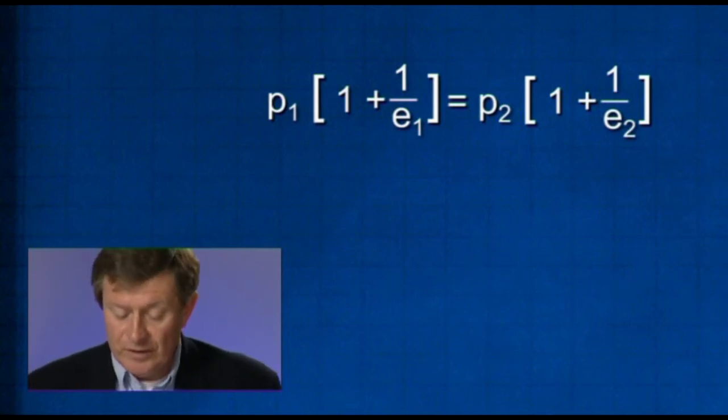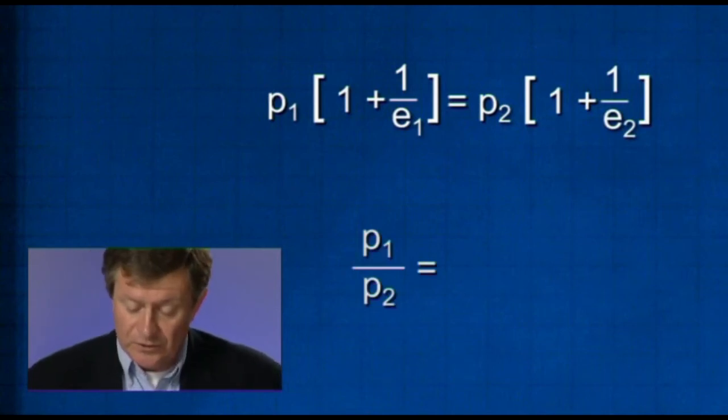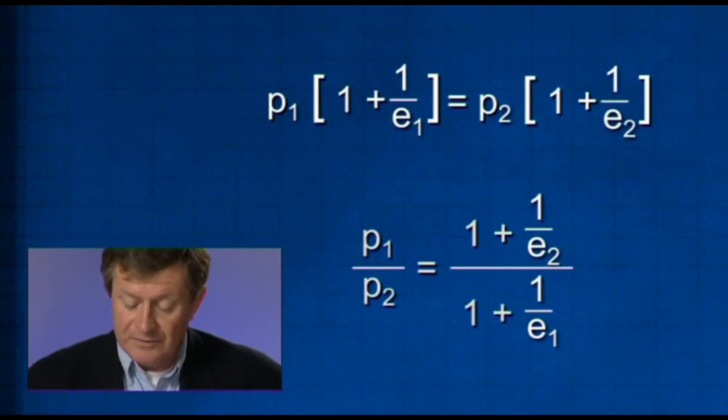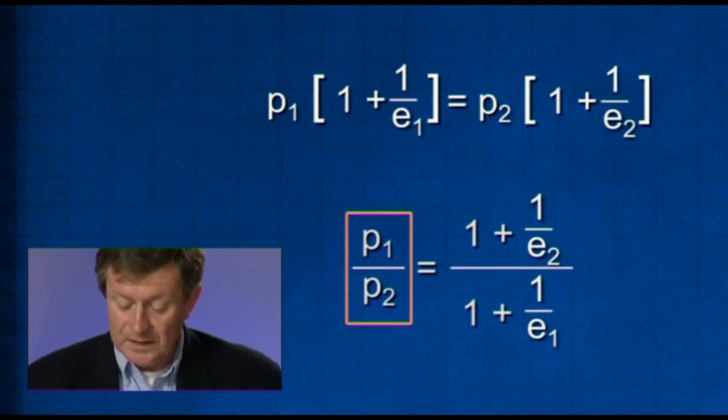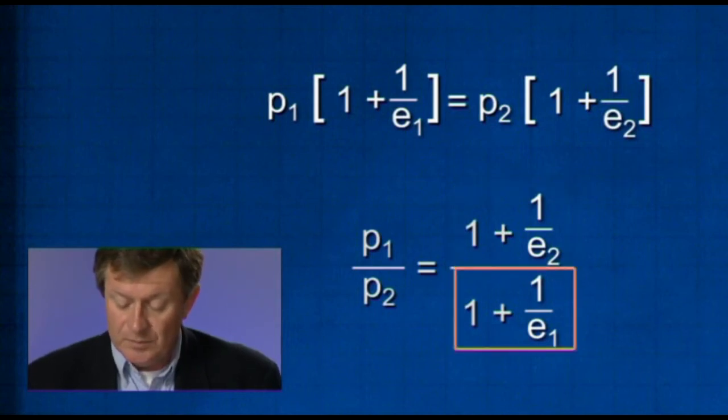And obviously we can rewrite it to have the prices on one side of the equation and the expressions involving the elasticities on the other side of the equation. Divide both sides by P2 and at the same time divide both sides by the expression in the brackets on the left-hand side, and we get P1 divided by P2 is equal to 1 plus 1 over E2, all divided by 1 plus 1 over E1.